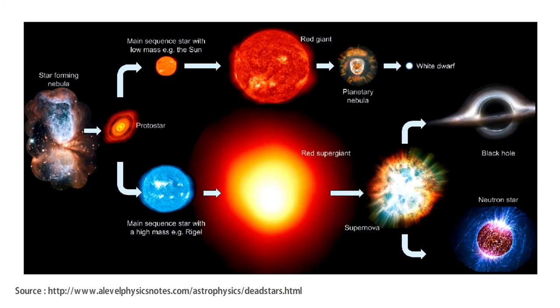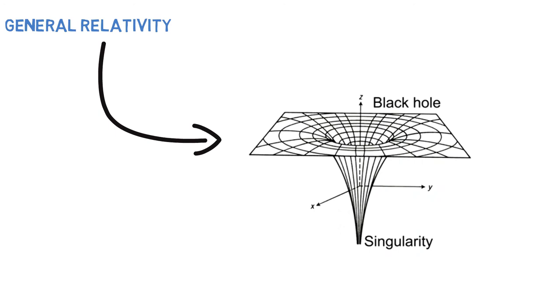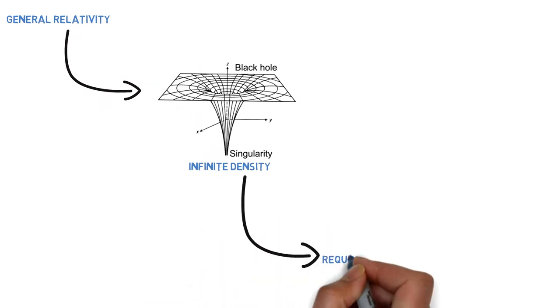A black hole forms when a massive star collapses under its own gravity to a very small size. General relativity predicts that the star collapses to a small point with infinite density. But that simply indicates that general relativity is inaccurate at very small scale. We need quantum field theory to describe objects at small scale.